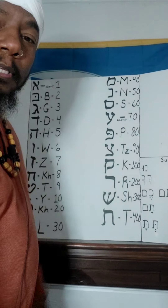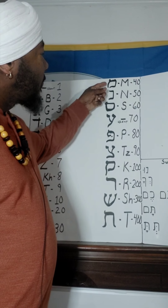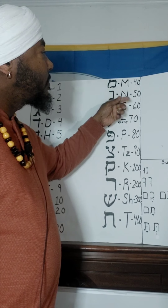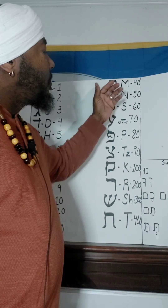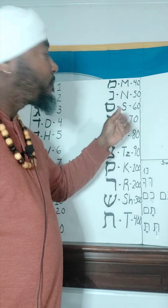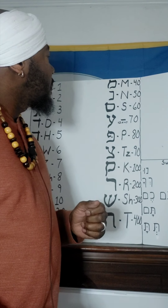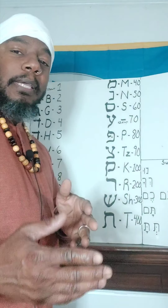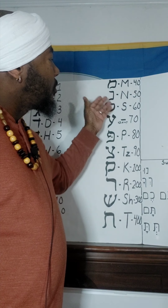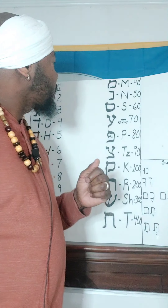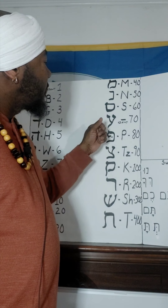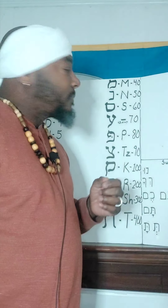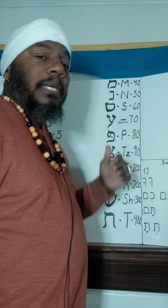Now, to this side. The letter here is Mem. The English equivalent to the Mem is M. The numerical equivalent is forty. The next letter is Noon. The English equivalent is the letter N. And the numeral equivalent to Noon is the number fifty. The next letter is Samic. The English equivalent is the letter S. And the numerical value is sixty.